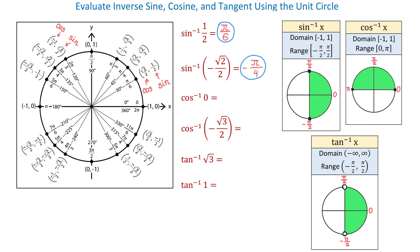Now let's talk about the inverse cosine function. The domain is any number from negative 1 to positive 1, and the range is any angle from 0 to pi. This means that angles in quadrant 1 and quadrant 2 are included in this interval. We have to evaluate inverse cosine of 0. On the unit circle, on the interval from 0 to pi, there is only one angle where the value of cosine is 0, and this angle is pi over 2. So inverse cosine of 0 is pi over 2.